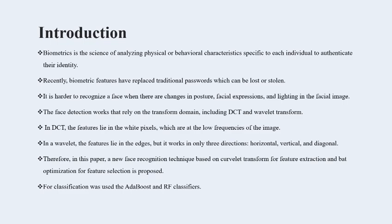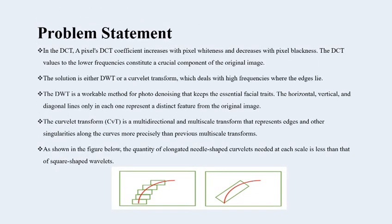For classification, AdaBoost and random forest classifiers were used. In the problem statement, in the DCT, a pixel DCT coefficient increases with pixel whiteness and decreases with pixel blackness. The DCT value at the lower frequency constitutes a crucial component of the original image. The solution is either a DCT-wavelet transform or a curvelet transform, which deals with high frequency where the edges lie.